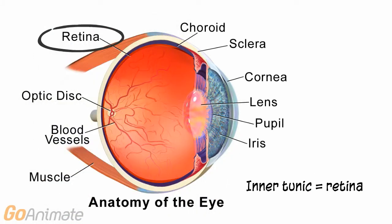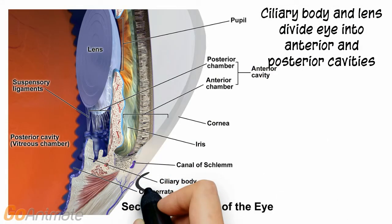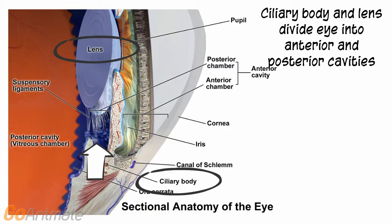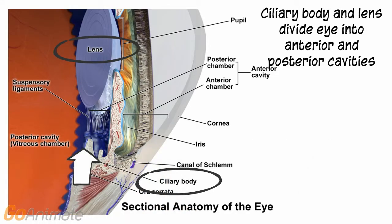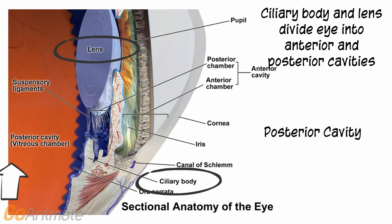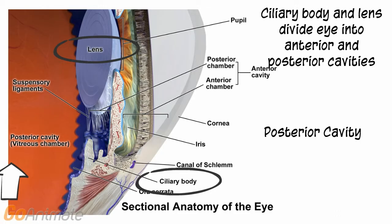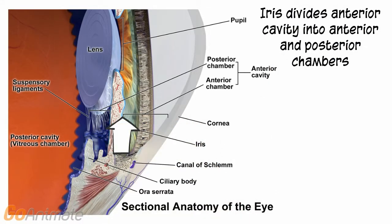The inner tunic includes the retina, which contains light receptors or photoreceptors. The anterior portion of the eye contains the anterior cavity. The lens and ciliary body divide the eye into anterior and posterior cavities. The iris divides the anterior cavity into anterior and posterior chambers.